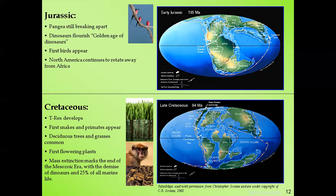A mass extinction marked the end of the Mesozoic era — the dinosaurs, including T-Rex, disappeared along with 25% of all marine life. The Earth was unstable at that time, with gases trapped in an unstable atmosphere. Asteroids and meteorites also contributed to the extinction of creatures during the Mesozoic era.